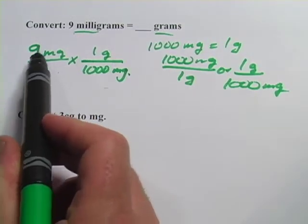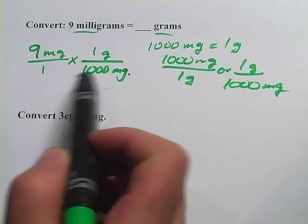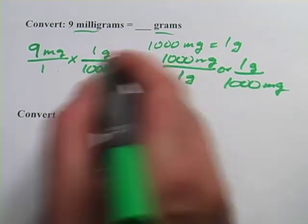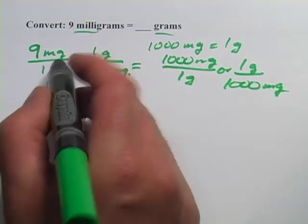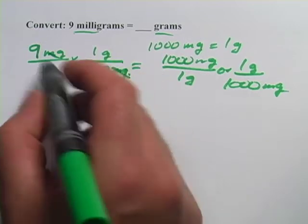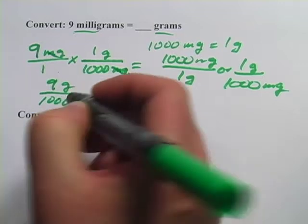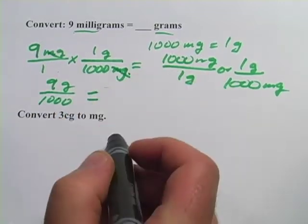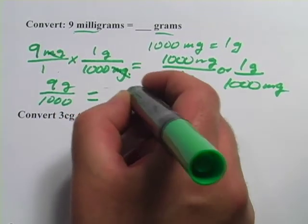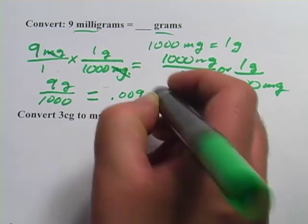And now we can do the math. We've got 9 times 1 on the top and 1 times 1,000 on the bottom. That comes out to 9, and the milligrams cancel, 9 grams over 1,000. And if you punch that in on your calculator, you'll get .009 grams.